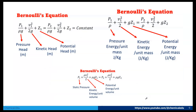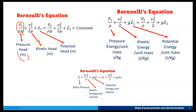Applying Bernoulli's equation between two points gives: P1/ρg + V1²/2g + z1 = P2/ρg + V2²/2g + z2, where each term has units of meters. It can also be written as: P1/ρ + V1²/2 + gz1 = P2/ρ + V2²/2 + gz2, where terms represent energy per unit mass in joules per kg.